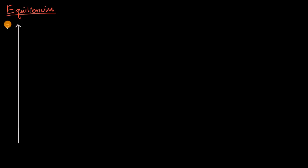What we're going to do in this video is talk about the notion of equilibrium in a macroeconomics context. Let's review a little bit of what we've already studied about aggregate demand and aggregate supply. The vertical axis here is the price level for the economy we are trying to study, and the horizontal axis would be the real GDP for that economy.